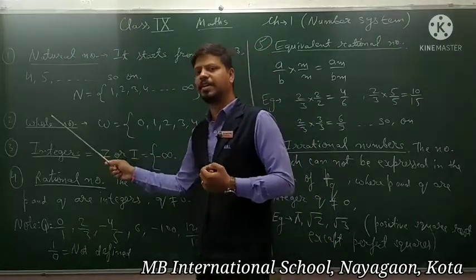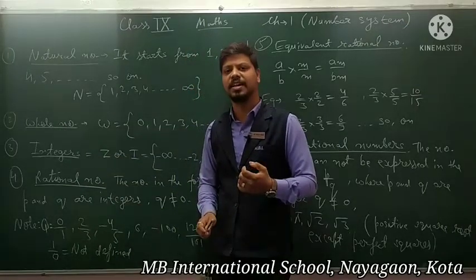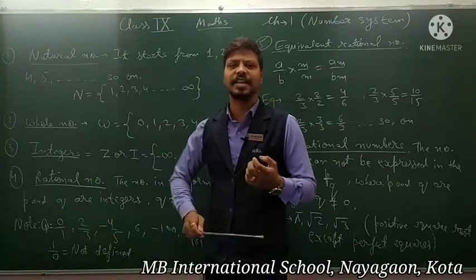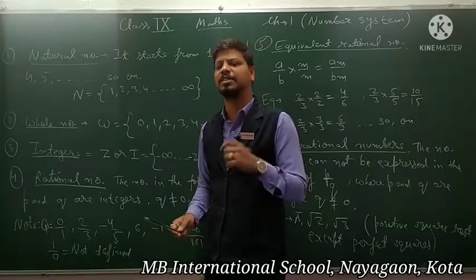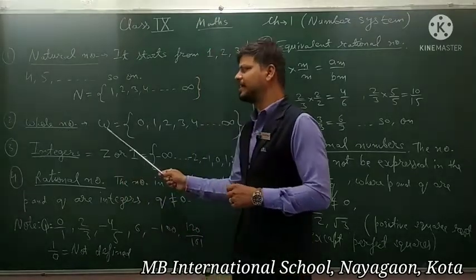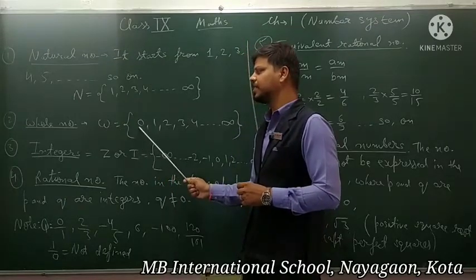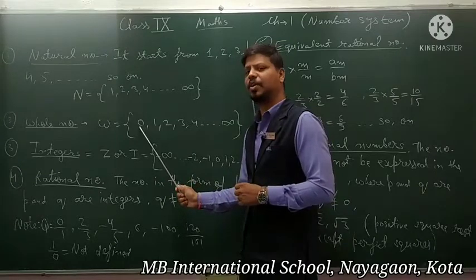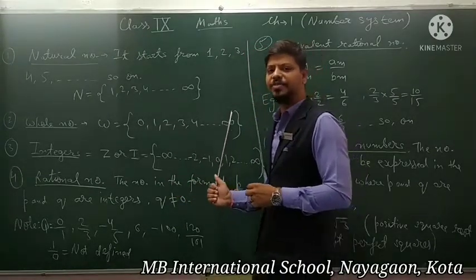Now the second definition is whole number. What is the whole number? It is a group of 0, 1, 2, 3, up to infinite. Means if we take natural numbers and add zero to them, the set of numbers we get is called whole number. Whole number is represented by capital W, and W = {0, 1, 2, 3, 4, ...} up to infinite.